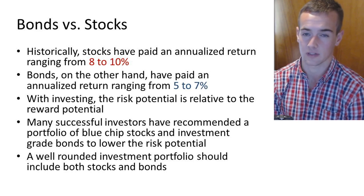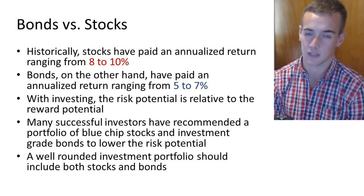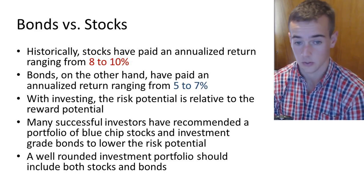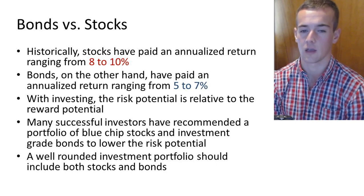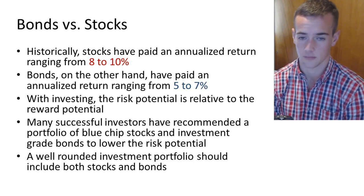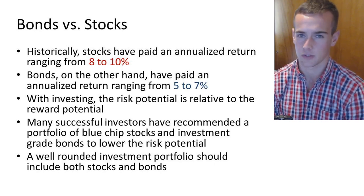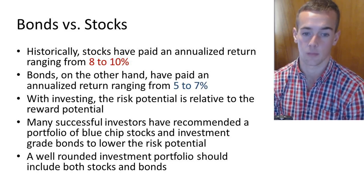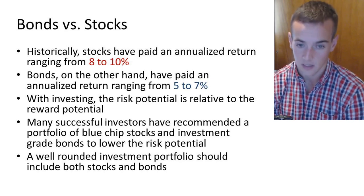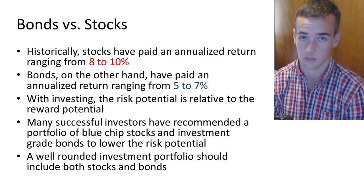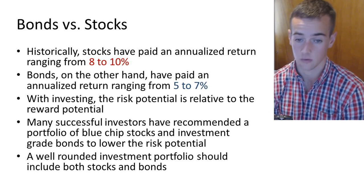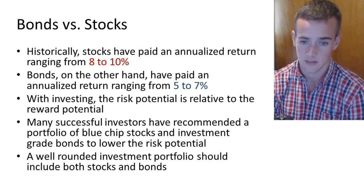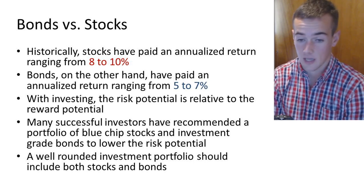Some people get in trouble because they're looking for an unrealistic return from the market and as a result, they take on too much risk. You definitely want to make sure you have a realistic approach when it comes to investing and not be seeking an unrealistic return that puts you into a really high risk investment. Many successful investors, namely Benjamin Graham in The Intelligent Investor, have recommended a portfolio of blue chip stocks and investment grade bonds. A well-rounded investment portfolio should include both stocks and bonds.